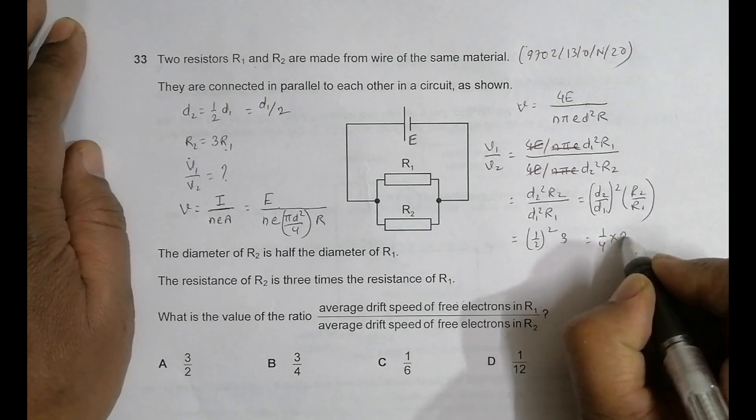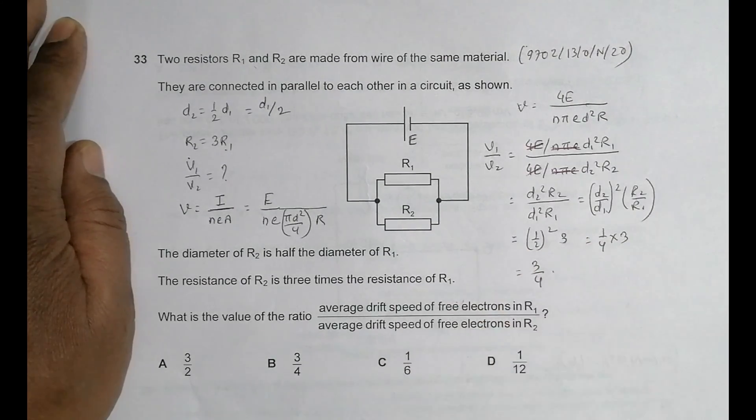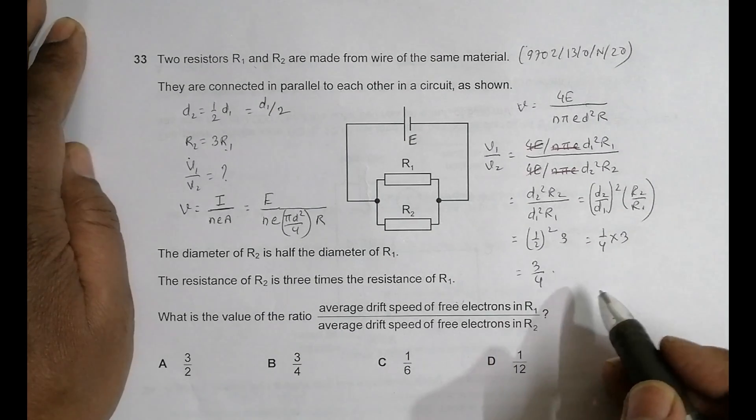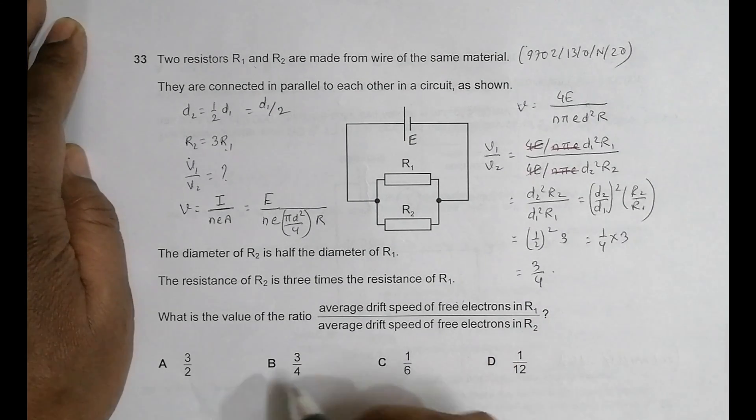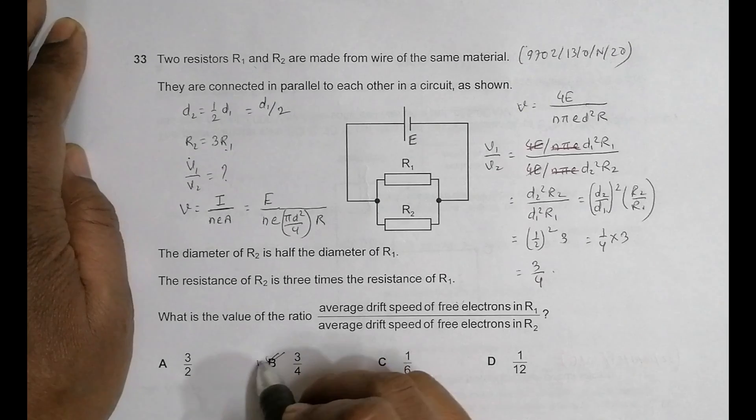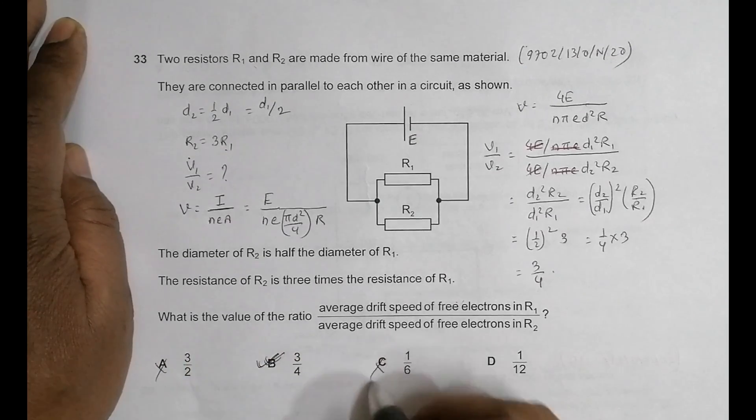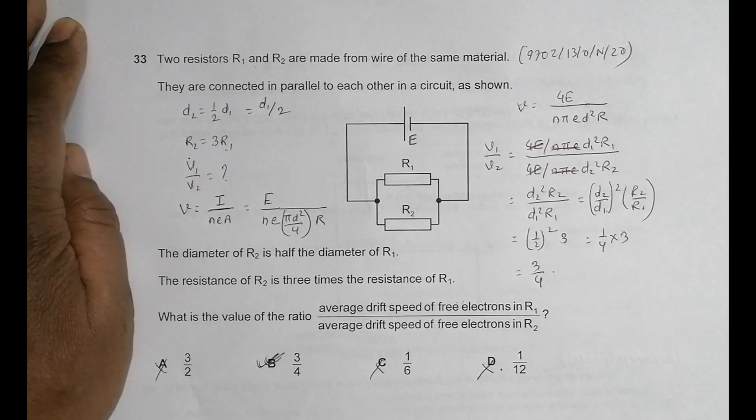Going through the answer choices, choice number B becomes the correct choice. All the others are wrong choices.